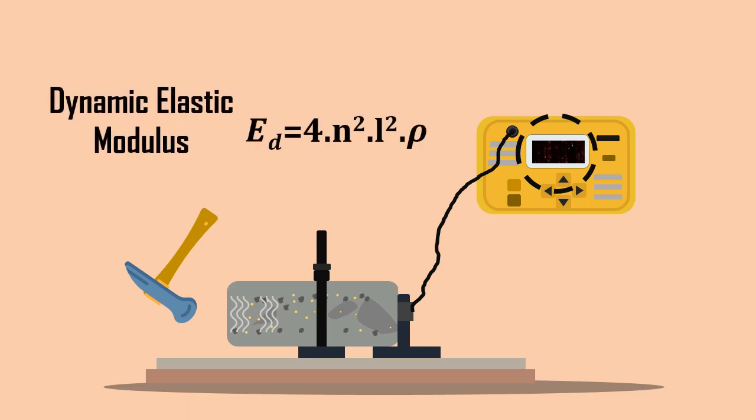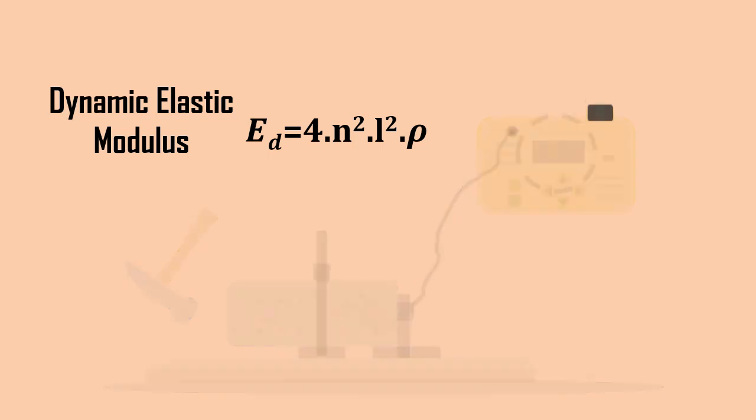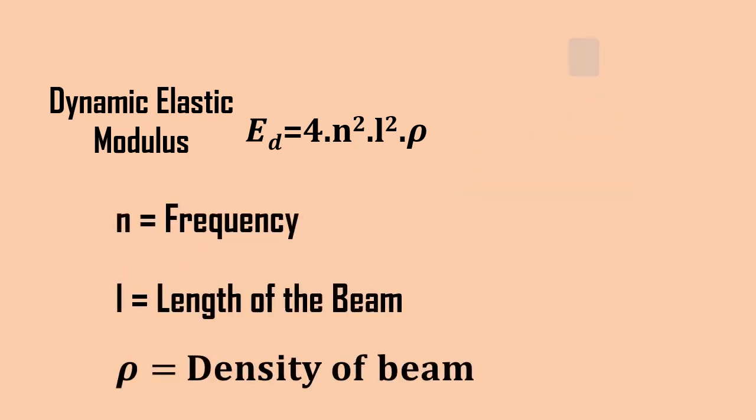With the help of this frequency, the dynamic elastic modulus is calculated by the equation Ed = 4n²l²ρ, where n is frequency, l is length of the beam, and rho is the density of beam.